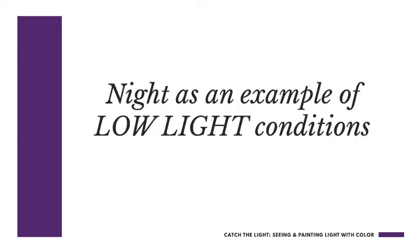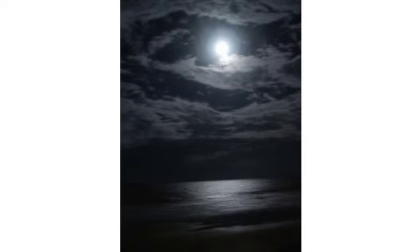Night is an example of low light conditions. In a nighttime scene, such as a photograph of the moon over the ocean, we have extremely limited light. When you have very limited light, several things happen — it changes the relationship of the four elements of color and alters our perception of the lighting situation tremendously. Low light means there is less available light to create contrast in hue, value, intensity, or temperature.